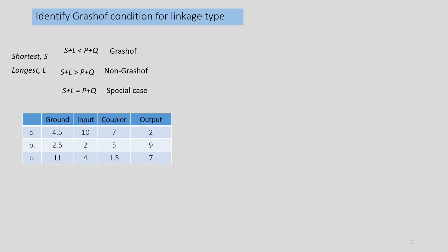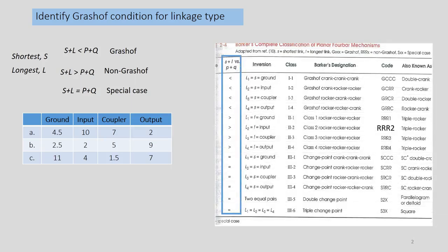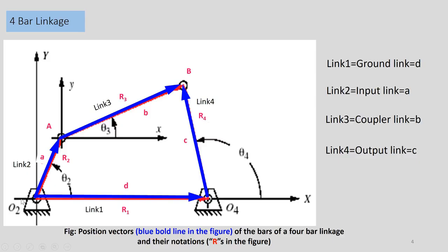Based on this relationship, we use a table derived by Barker. This table contains 14 types of links. We are particularly interested in the first column where the relationship is provided. Based on this relationship, we can choose whether our chosen linkage is Grashof, non-Grashof, or special Grashof. This is a four-bar linkage — a very simple four-bar linkage.